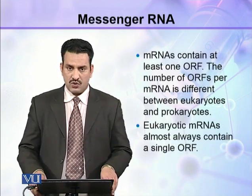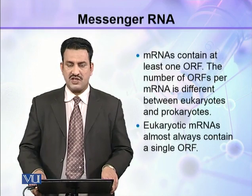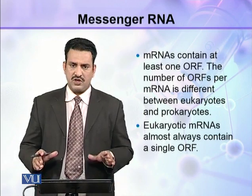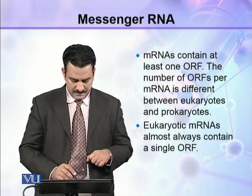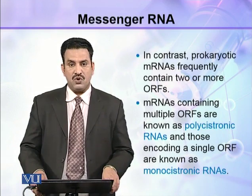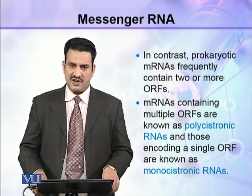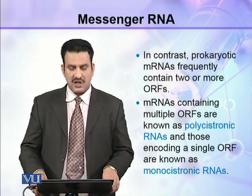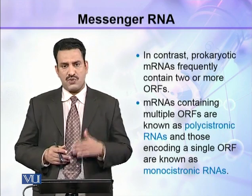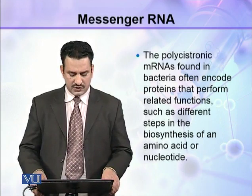mRNAs contain at least one ORF. The number of ORFs per mRNA differs between eukaryotes and prokaryotes. Eukaryotic mRNAs almost always contain a single ORF — so one mRNA means one ORF. In contrast, prokaryotic mRNAs frequently contain two or more ORFs. mRNAs containing multiple ORFs are known as polycistronic RNAs, while those encoding a single ORF are known as monocistronic RNAs.